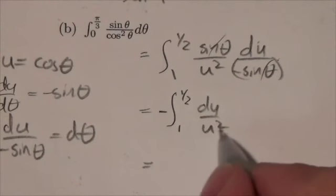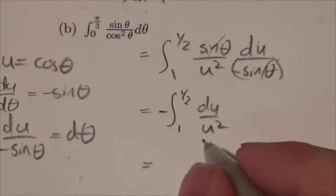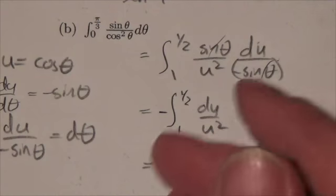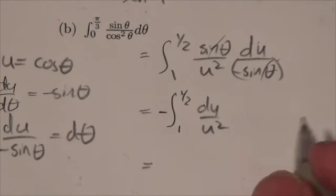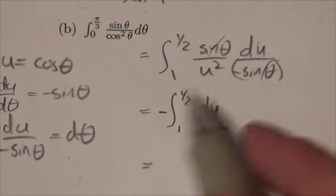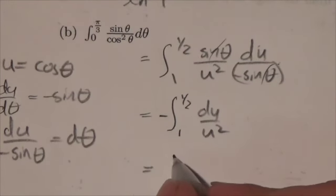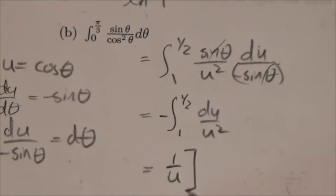Well this is like u to the negative 2. So the integral of that is I'm going to take the exponent up one. So negative 2 goes to negative 1. And I'll divide by the negative 1. And what that's going to do is cancel with the negative here. So this actually ends up being very simply 1 over u. And I will evaluate that between 1 half and 1.